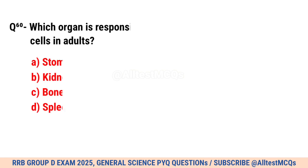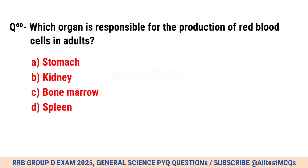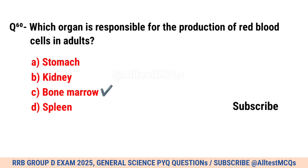Question No. 60. Which organ is responsible for the production of red blood cells in adults? Correct option is C. Bone marrow.